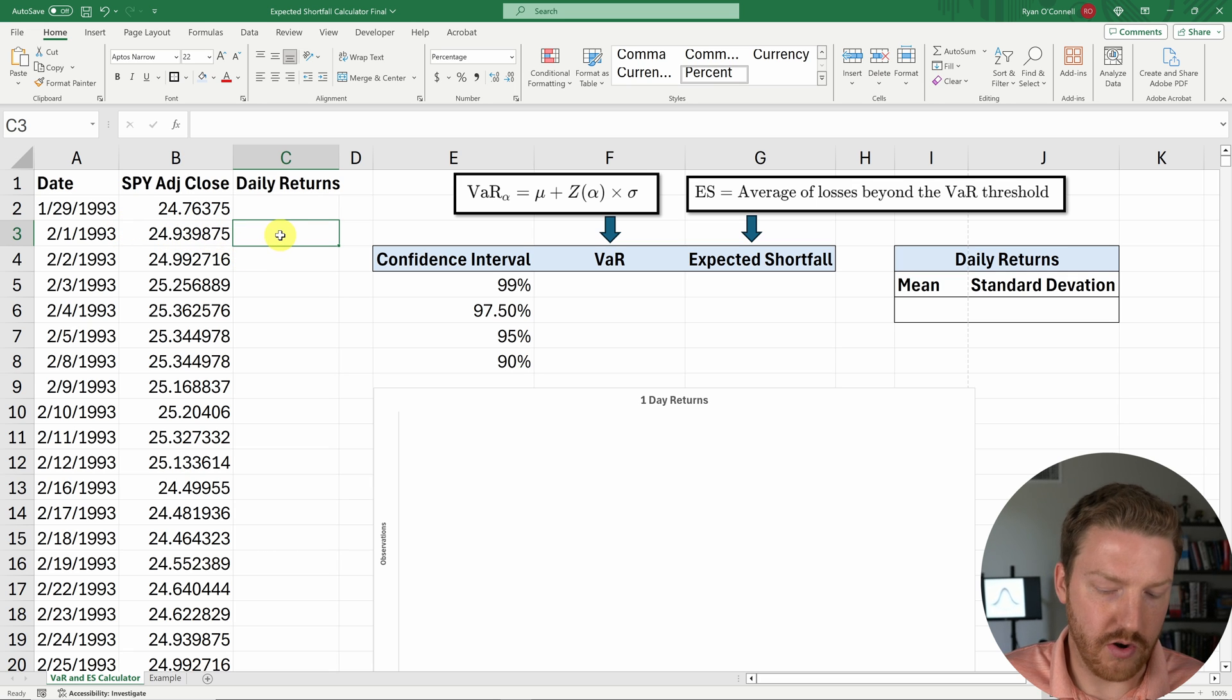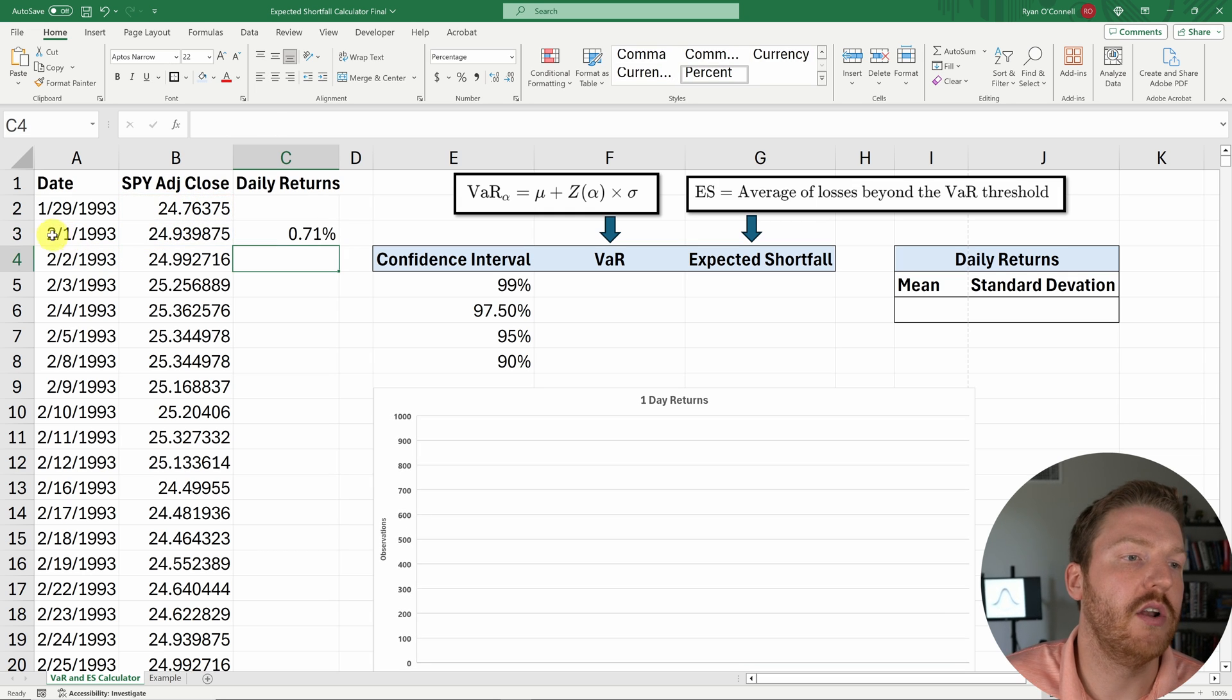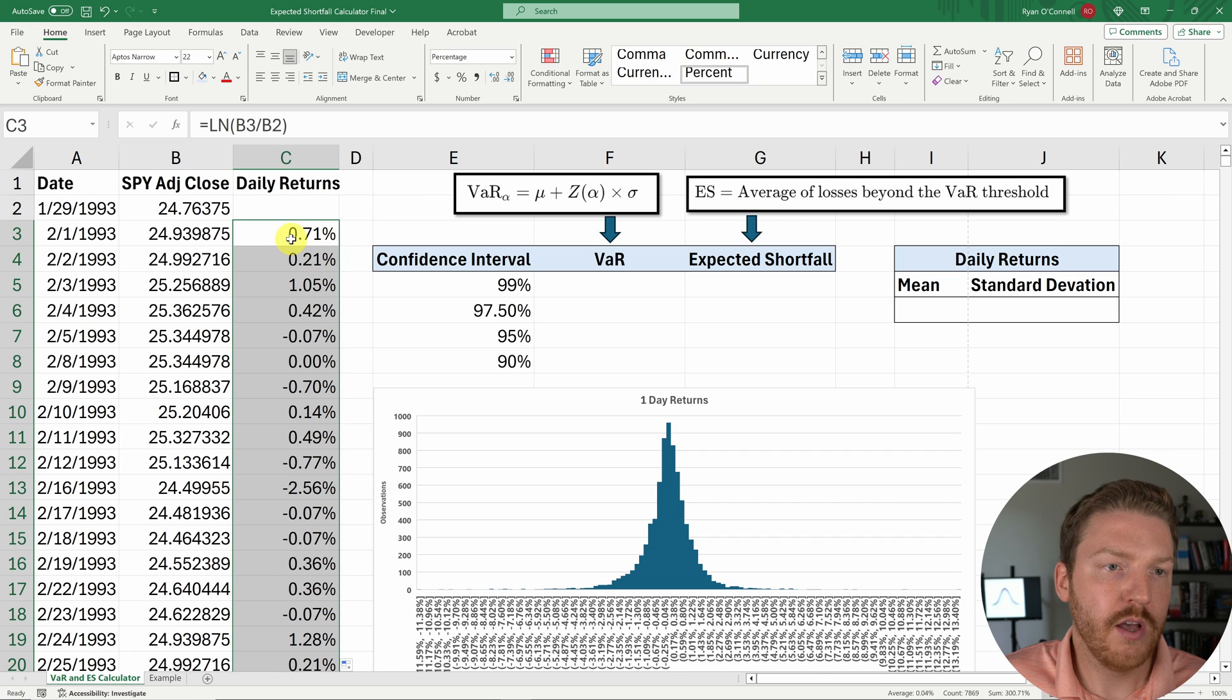So we can start off here doing equals LN. Now I'm going to use the natural logarithm method to calculate the daily returns. So I'll take one day's price divided by the previous day's stock price and hit enter. And we find that on February 1st of 1993 that this ETF returned about 0.71%. I can double click this to shoot it all the way down. So now we have all the daily returns and we can see how they look here.